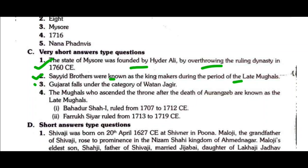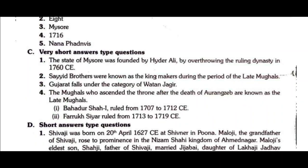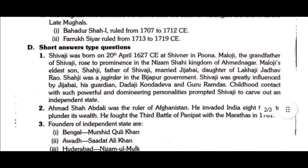Question number three: Which states fall under the category of Watan Jagir? Gujarat falls under the category of Watan Jagir. Question number four: Who are known as the late Mughals? The Mughals who ascended the throne after the death of Aurangzeb are known as the late Mughals. Bahadur Shah ruled 1707–1712 CE; Farrukhsiyar ruled from 1713 to 1719 CE.